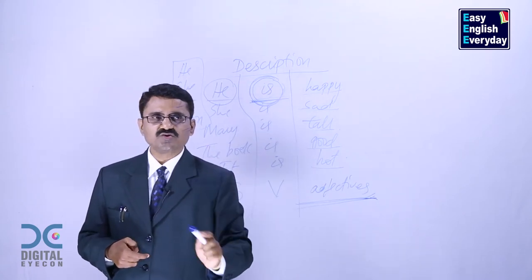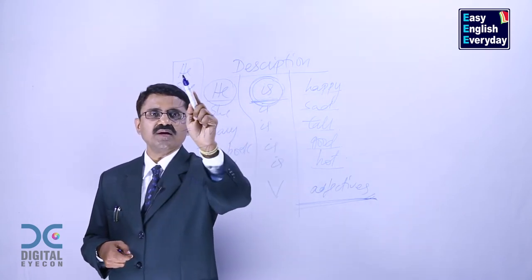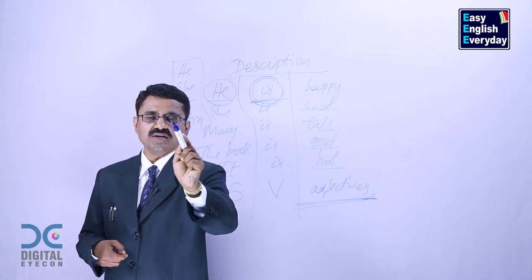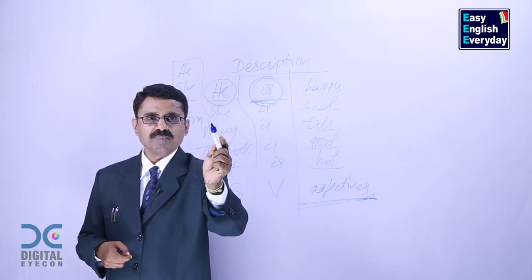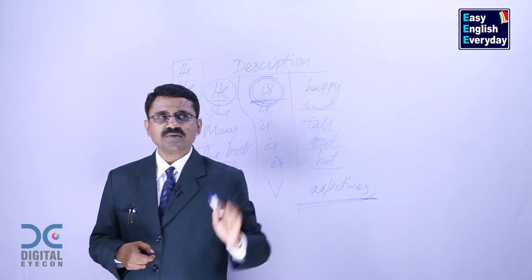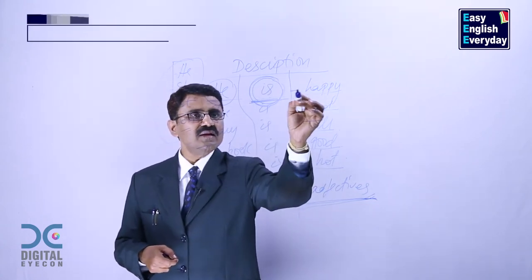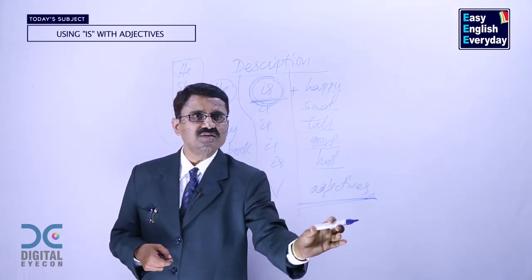This is grammar. Just remember two points. 'Is' is used by he, she, it and John. Any singular name. And it is used only for present tense. Then, keep on adding in this zone, adjectives.